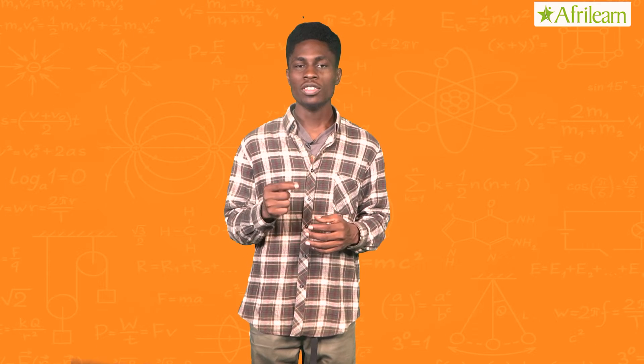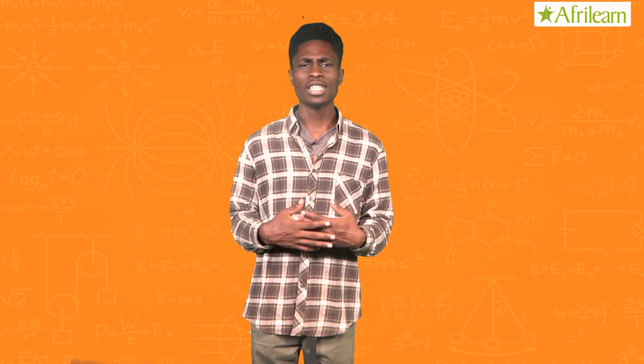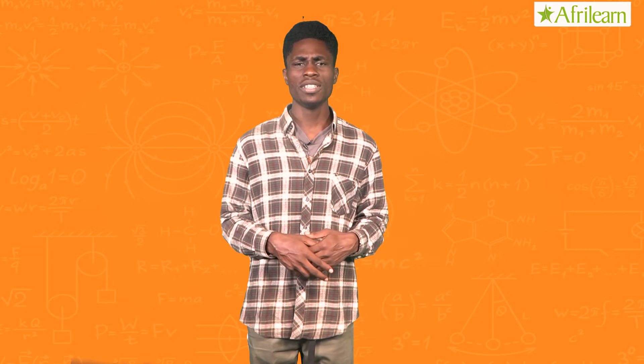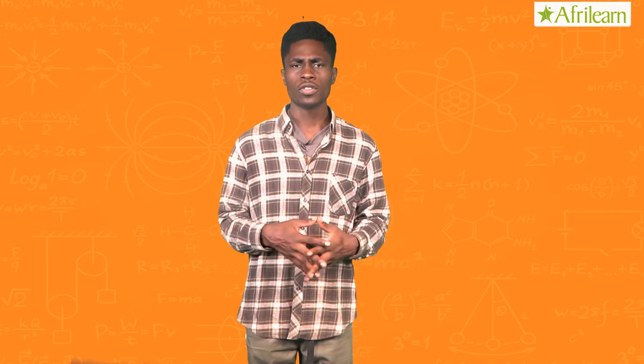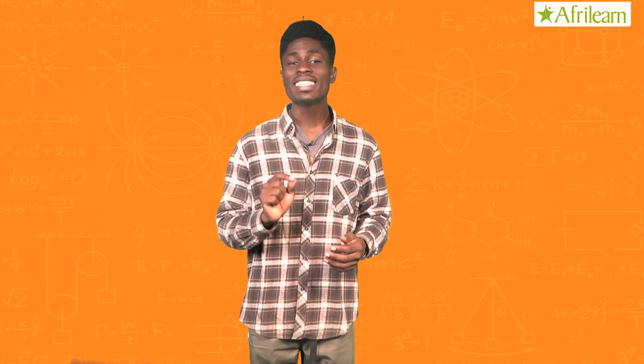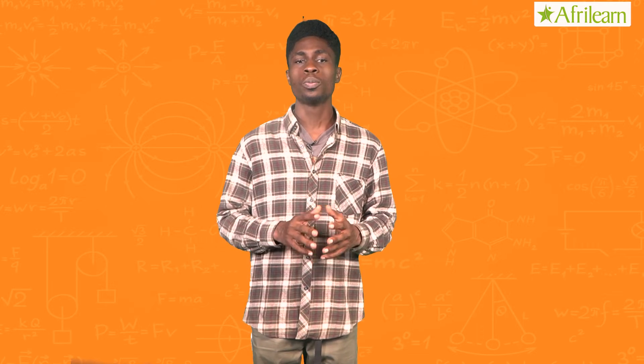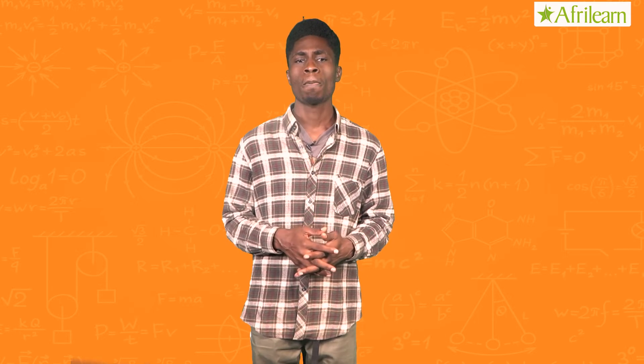Welcome to class. Today I'm going to be teaching you resistivity. Now the street lights get automatically switched on in the evening and switched off in the sunlight. This is because they sense the brightness and the darkness due to the presence of photoresistors in them.